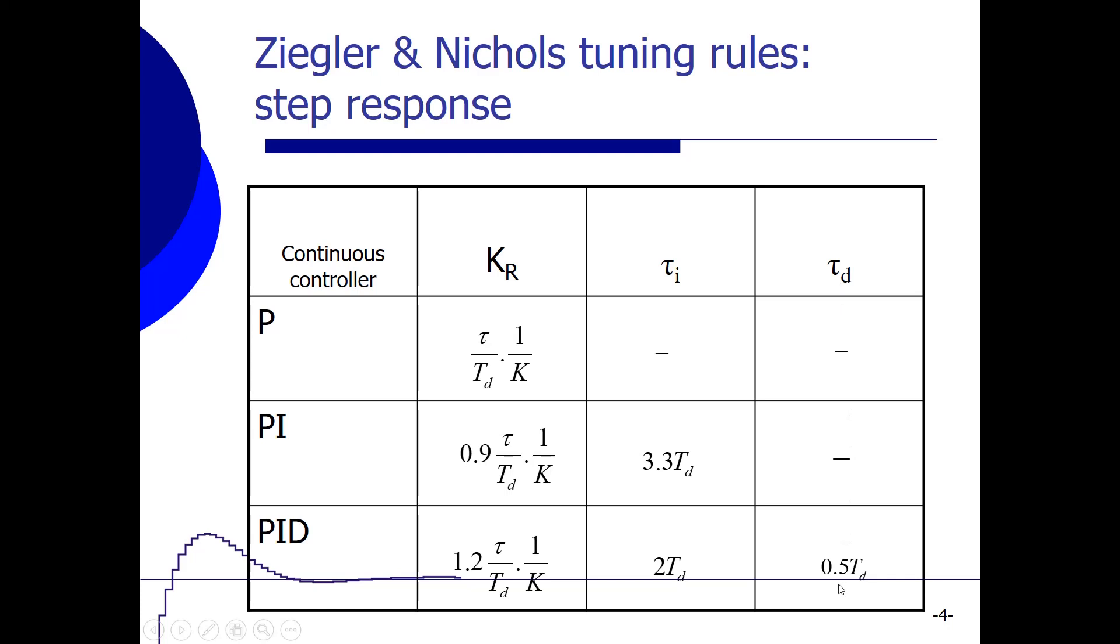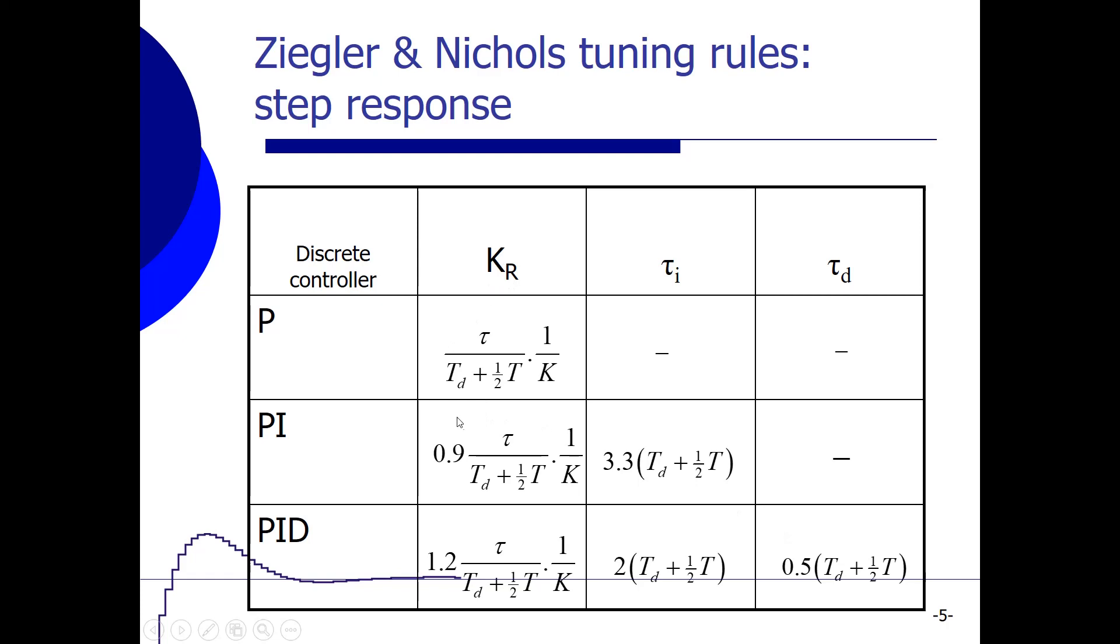Now we have a discrete controller, so we have to replace that tau_d in all these functions over here by tau_d plus half the sample time. And then we get this table for setting the K_R, tau_i and tau_d for a P, PI and PID controller. So in every case, tau_d has been replaced by tau_d plus that extra delay time due to sampling, which is 0.5 times sampling time T. We get that back in every expression over here.